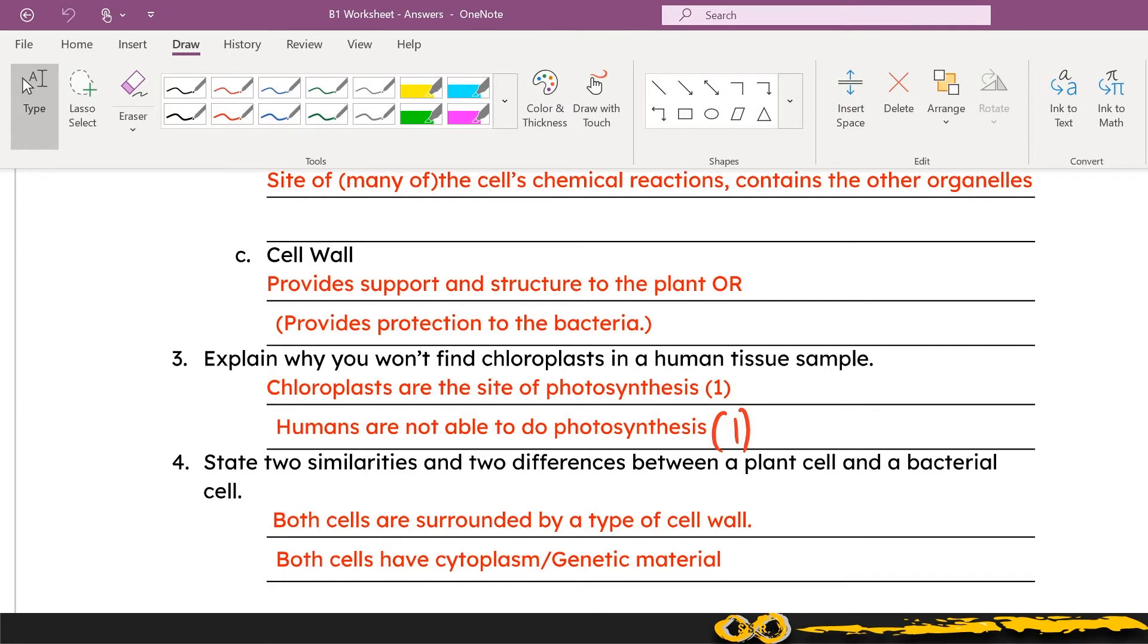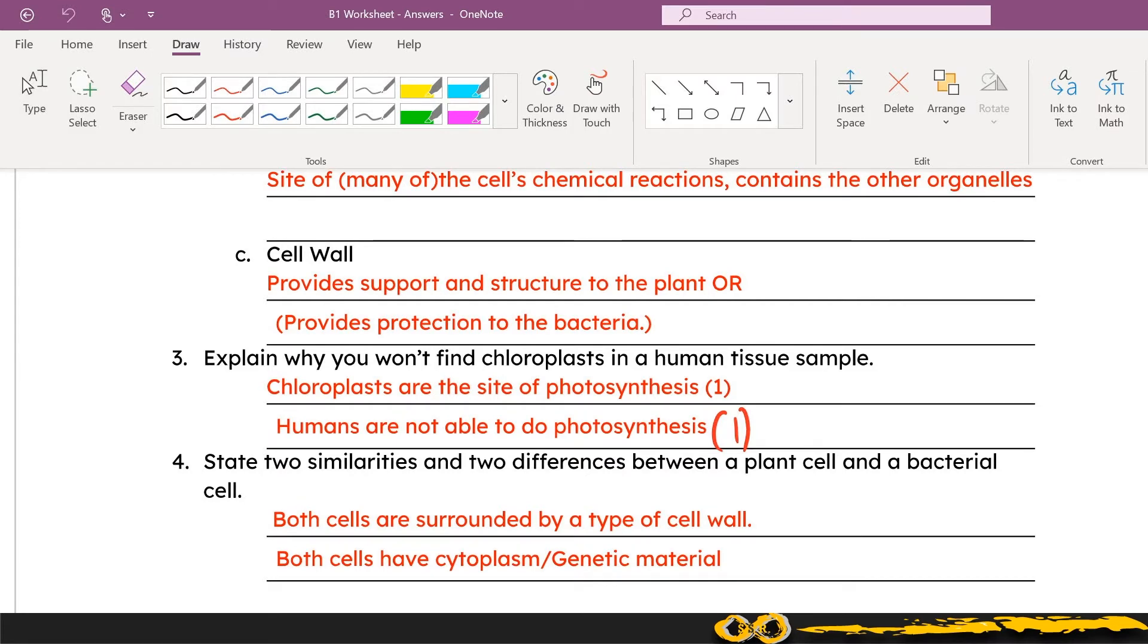At question number three you're looking at an application of that. So knowing that because humans aren't able to do photosynthesis we wouldn't have chloroplasts so that wouldn't be something that's present in our cells and just being able to apply that type of information when you're asked. Or for example where would you find more mitochondria and then you talk about the muscle tissues.